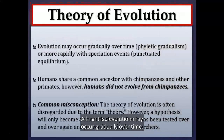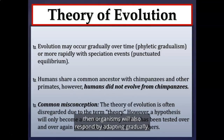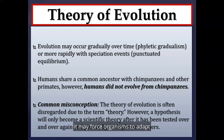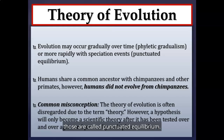Evolution may occur gradually over time — if the environment changes gradually, organisms respond by adapting gradually, also called phyletic gradualism. If the environment changes more rapidly or there's a major cataclysmic event, organisms may need to adapt and evolve more quickly or die out — these more rapid speciation events are called punctuated equilibrium.